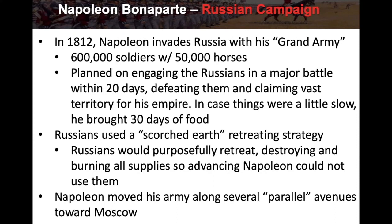The scorched earth strategy meant that as Napoleon advanced, the Russians did not stand to fight — instead they retreated, destroying all crops, supplies, bridges, and anything that could help Napoleon's army. They continued to retreat deeper and deeper into Russia to deny Napoleon resources and to draw him further in, stretching his supply lines.